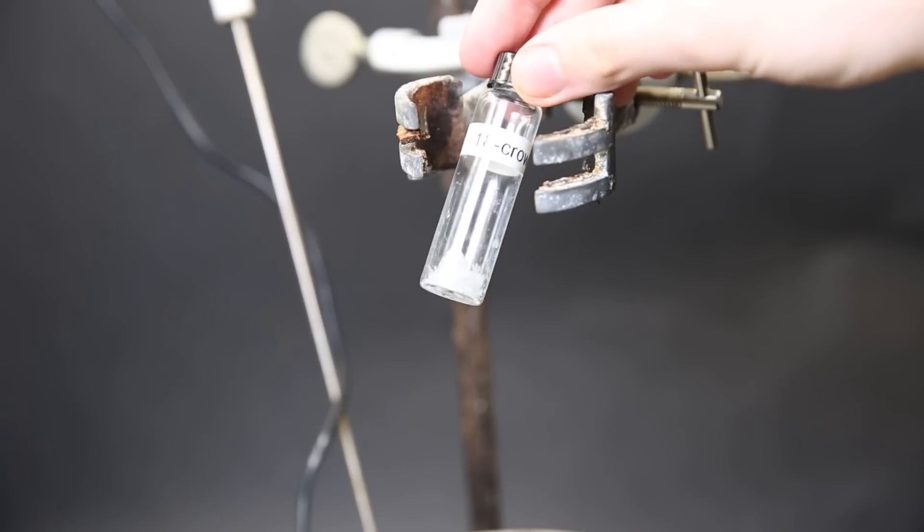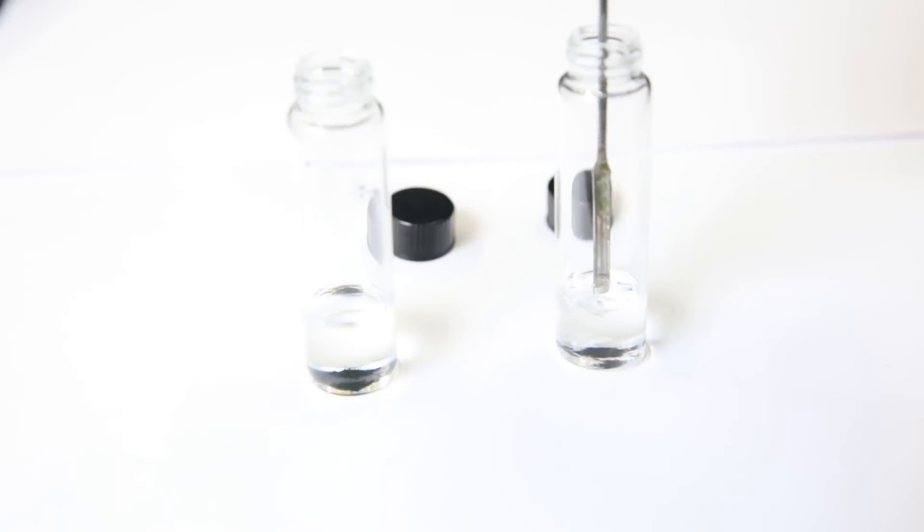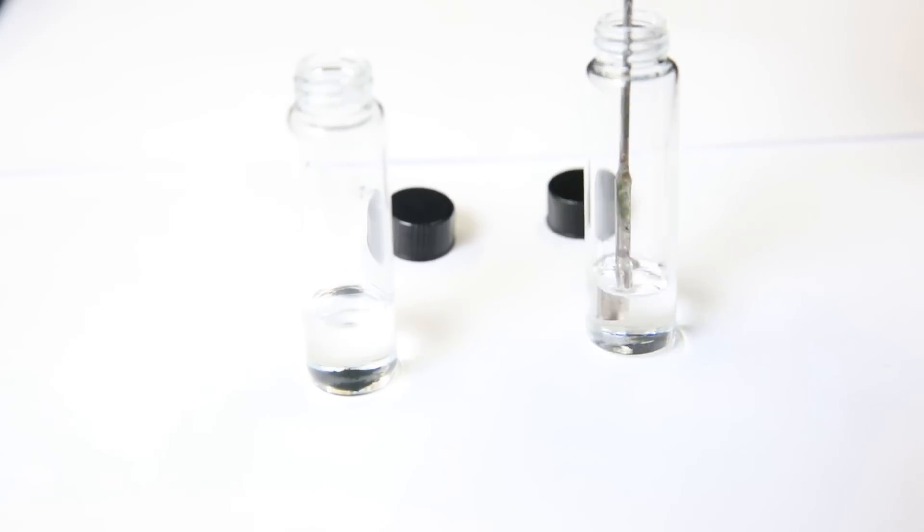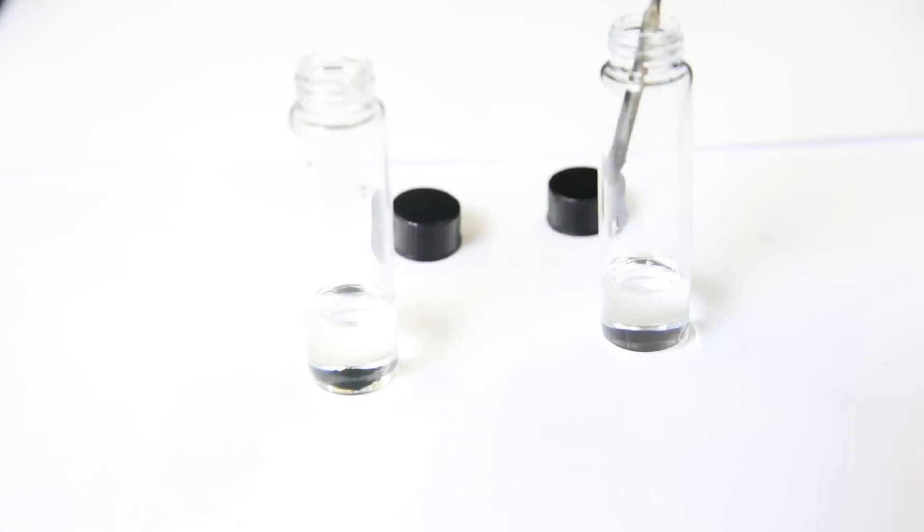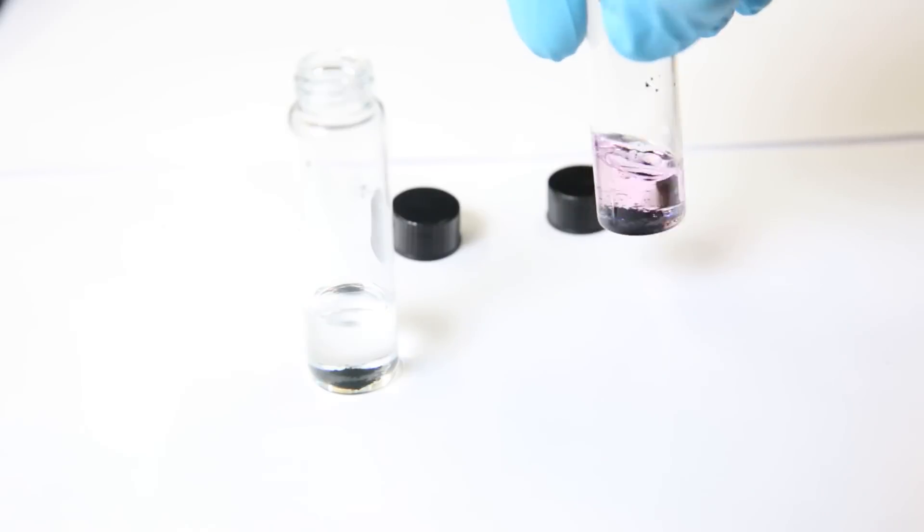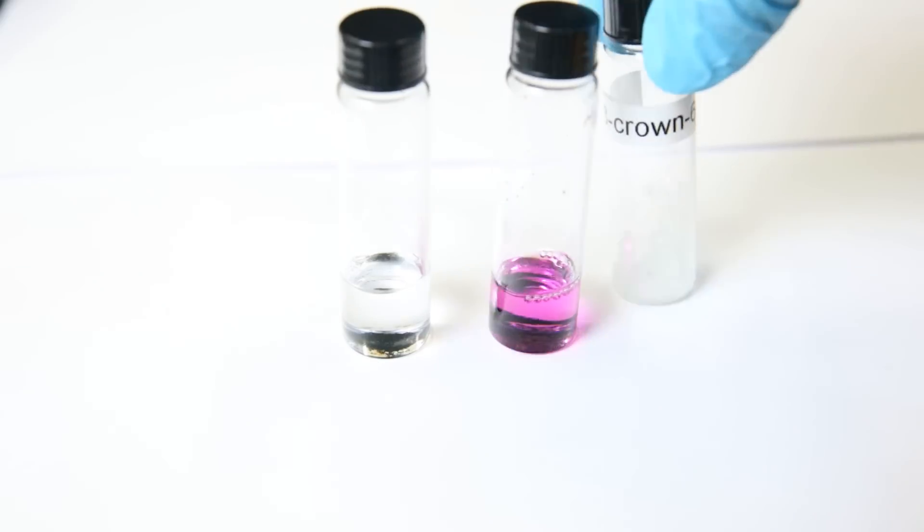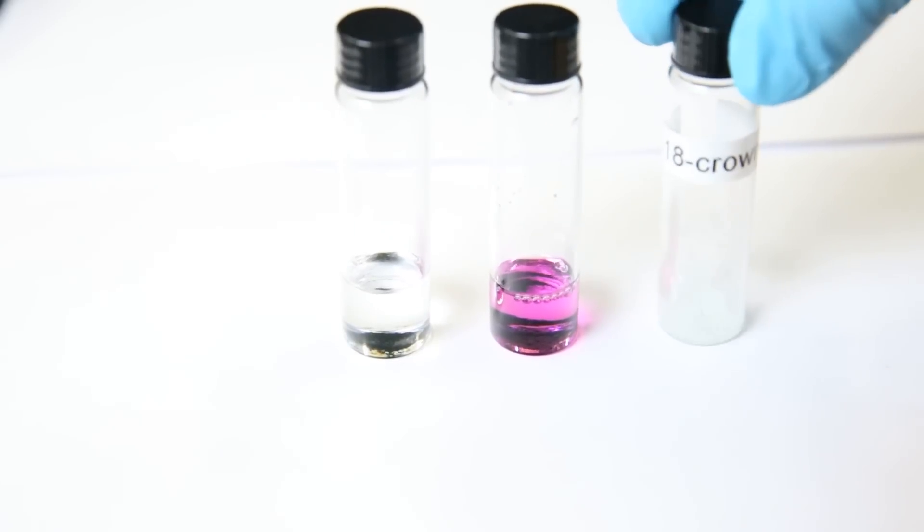To test if it is really 18-crown-6, we can do a small experiment. So I take two vials and fill both with some benzene that I made in a previous video. Then to the vial on the left, I add in a small scoop of potassium permanganate. As we can see, the potassium permanganate does not dissolve in the benzene and simply sits on the bottom. Then to the vial on the right, I add in a tiny bit of the freshly synthesized 18-crown-6, which quickly dissolves in the benzene. Then to this vial, I also add in a small scoop of potassium permanganate. I shake it around, and we can see that this time the potassium permanganate does dissolve in the benzene, which is a characteristic property of 18-crown-6. So now we have some purple benzene, and we have confirmed that we indeed have 18-crown-6.